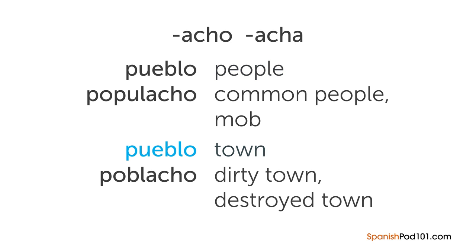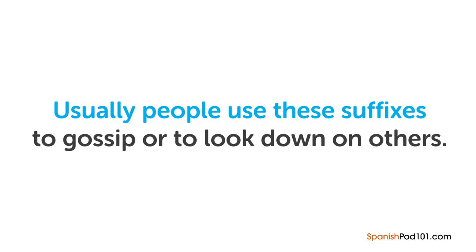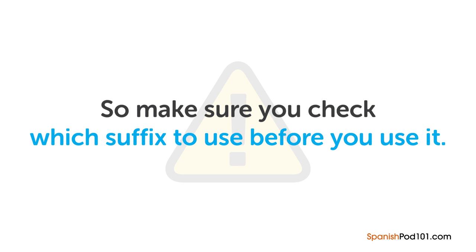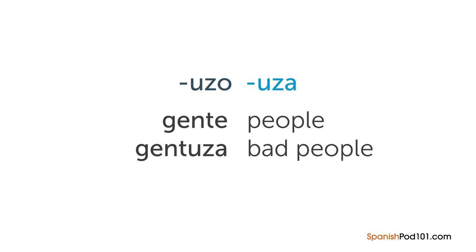By adding a pejorative suffix, the speaker shows less consideration for the original meaning. 'Pueblo' meaning town becomes 'poblacho' meaning dirty or destroyed town. An example sentence: 'El populacho cree que puede ganar en las elecciones' — meaning 'The common people think they can win the elections.' Other less common pejorative suffixes include -ejo or -eja, changing 'tipo' meaning guy to 'tipejo' meaning bad guy, and 'calle' meaning road to 'calleja' meaning narrow road; or -uza, from 'gente' meaning people to 'gentuza' meaning bad people.